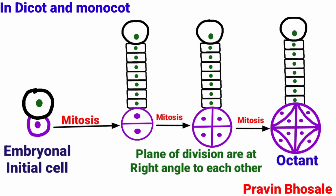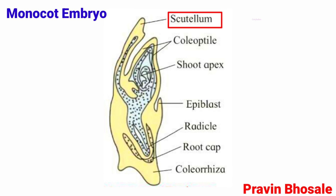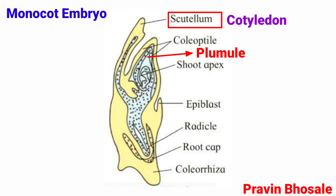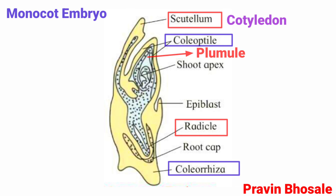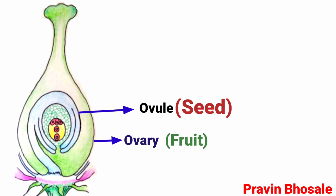Embryo development is similar in both dicot and monocot up to the octant stage; differences appear later. In monocot embryo, a single cotyledon occupies the terminal position and the plumule is lateral. The protective sheath of the plumule is called coleoptile and that of the radicle is coleorhiza. Finally, the ovule is transformed into the seed and the ovary into the fruit.